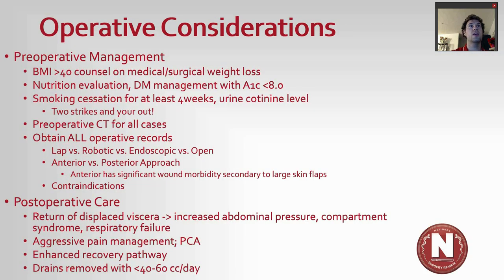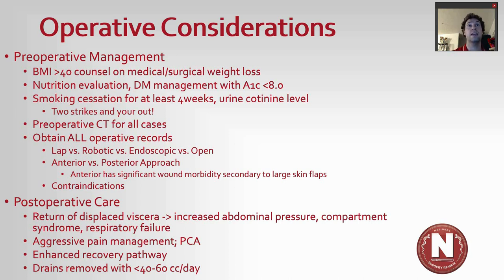Preoperative management is important and sets you up for success. I require a BMI less than 40; if higher, patients must have medical or surgical weight loss. There are very few indications for emergent repair of these large hernias. I get a nutrition evaluation on everybody to ensure adequate protein levels. Diabetic management requires an A1c less than 8 prior to operation. Smoking cessation for at least four weeks is confirmed with a urine cotinine test — two failed tests and I will not operate, as smoking is the biggest predictor of hernia infection and recurrence.